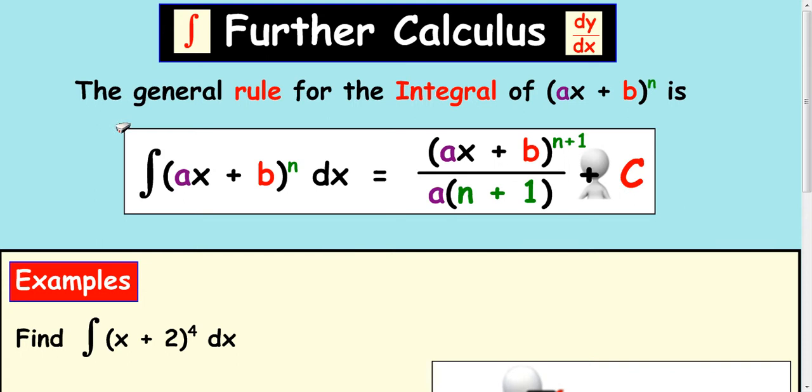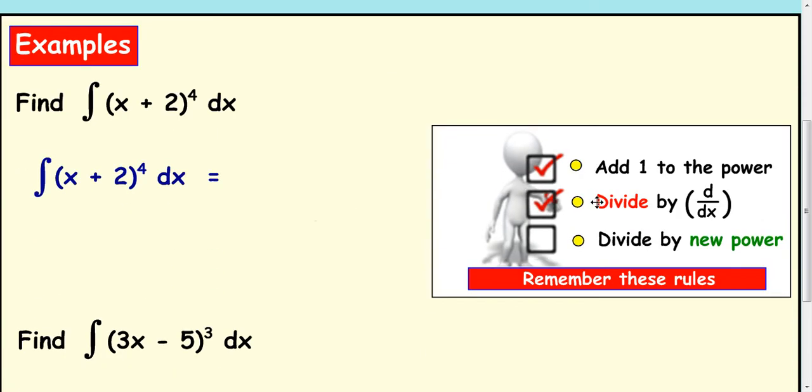So let's see how this works in terms of some examples. Here's the formula: add one to the power, divide by the derivative of the bracket and also the new power. And also remember to put plus c in, unless you're integrating an area. So I've put the rules here at the side. These are the three things you must do. Let's look at it in terms of this integral here.